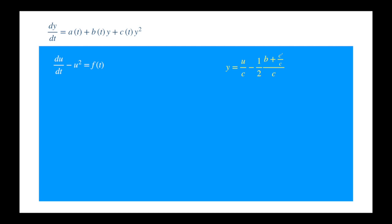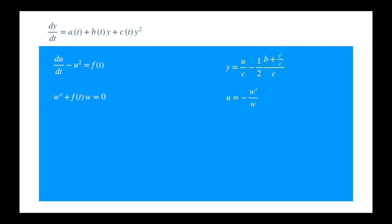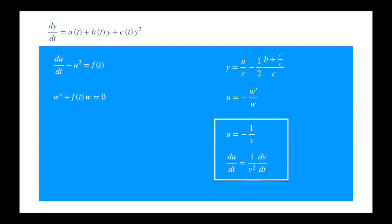You can also transform this equation into the second order linear equation. So you set u equal to the derivative of w divided by w. We have seen this transformation before, but it is simpler here. We need the derivative of u as well, which is easy to calculate via product rule. Now we can make the substitutions. So the squared terms cancel and we can rearrange to get the desired second order linear equation. We can also express the Riccati equation in the canonical form — you just set u equal to minus 1 divided by v. The derivative of which is easy to calculate. We can substitute these into the reduced form of the Riccati equation, and then multiply through by v squared to get the equation in the canonical form, which we can also write in the more familiar form.